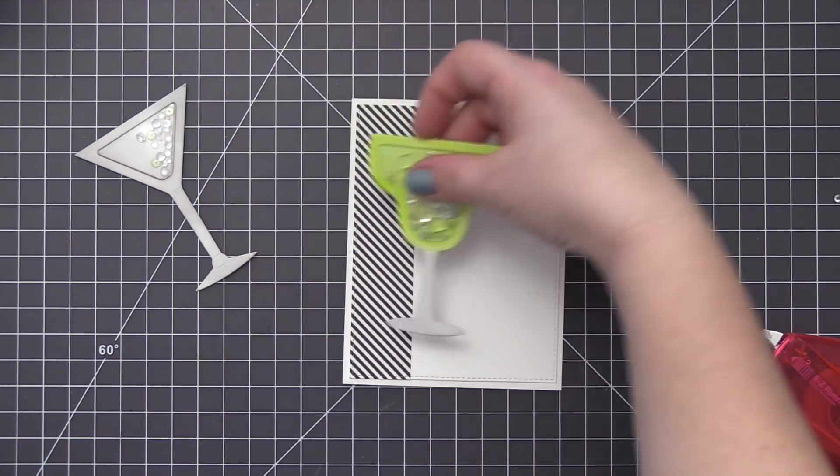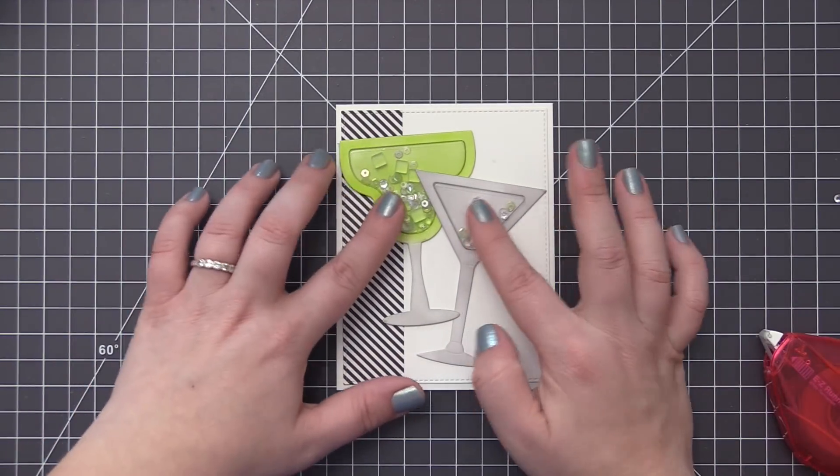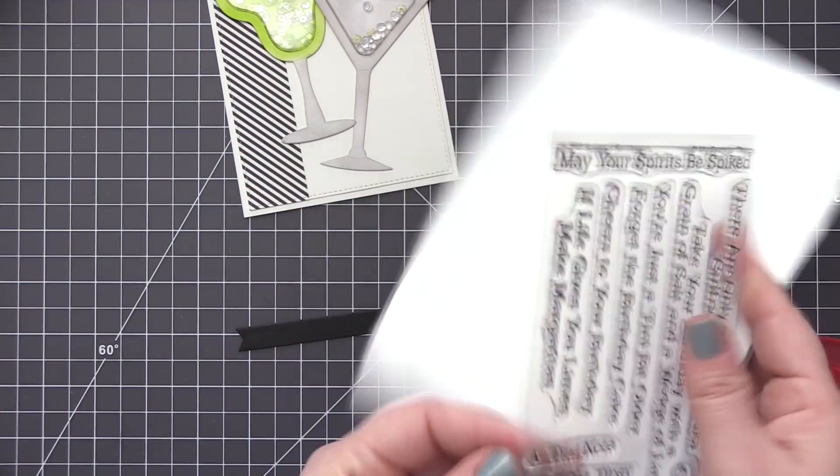And you can see when we add those finished cocktail glasses how nice and big they are so they're really the focus of the card design. Now for the sentiment we're going to use the spirited sentiment stamp set.